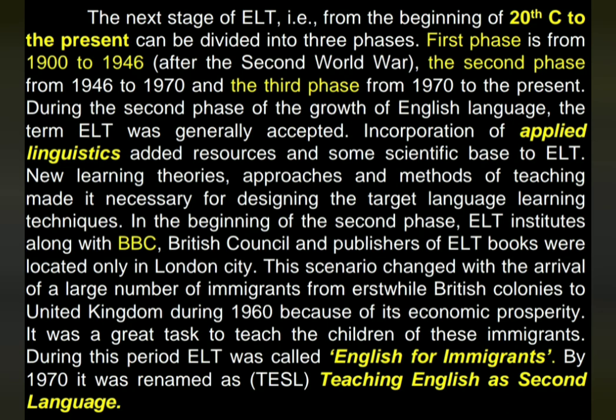The next stage of ELT, that is from the beginning of the 20th century to the present, can be divided into three phases. The first phase is from 1900 to 1946, the second phase from 1946 to 1970, and the third phase from 1970 to the present.